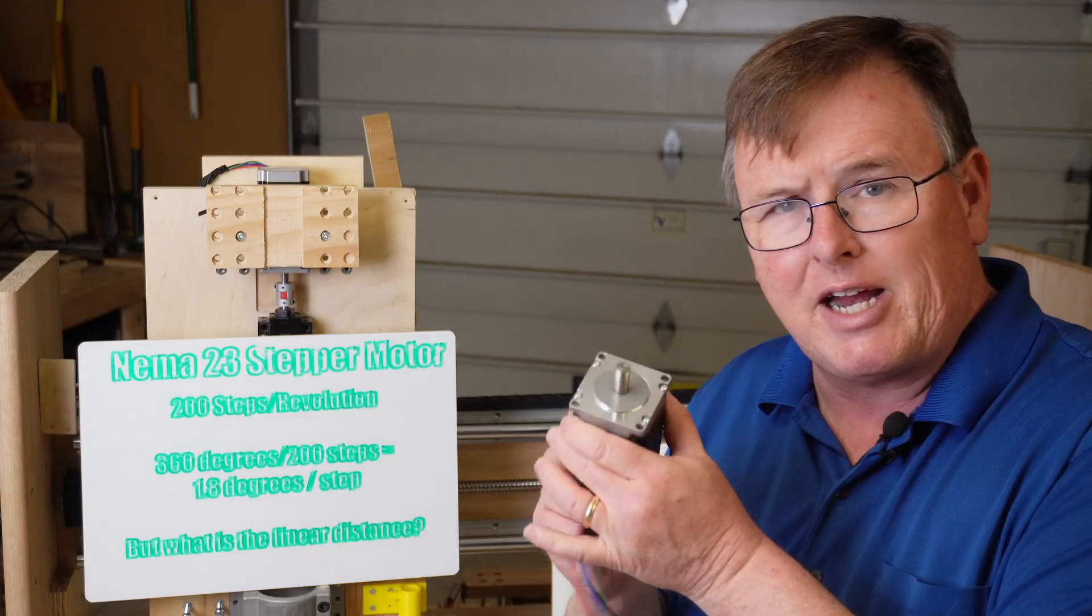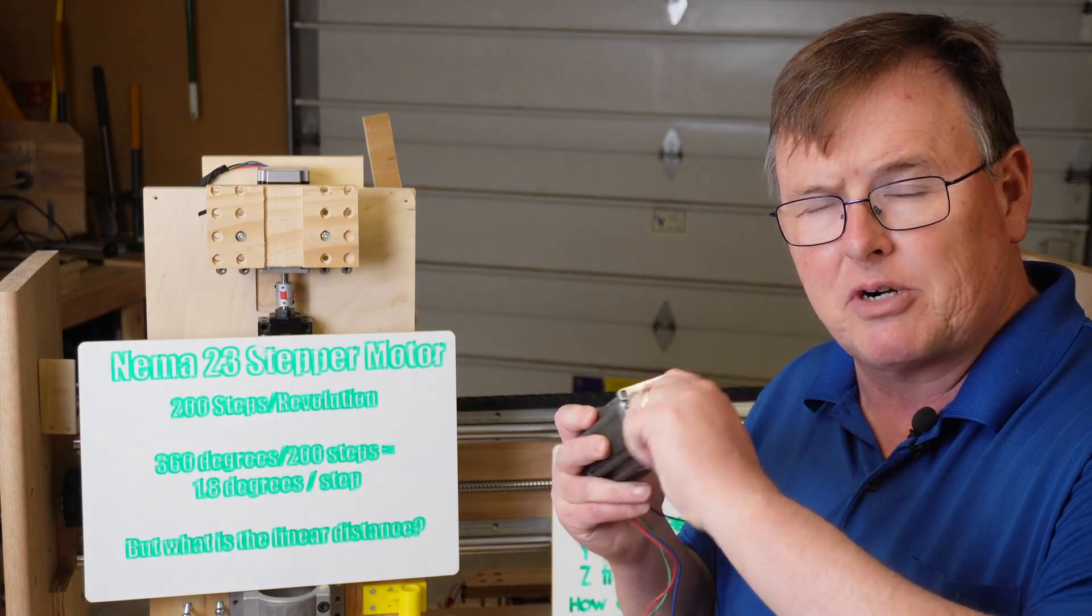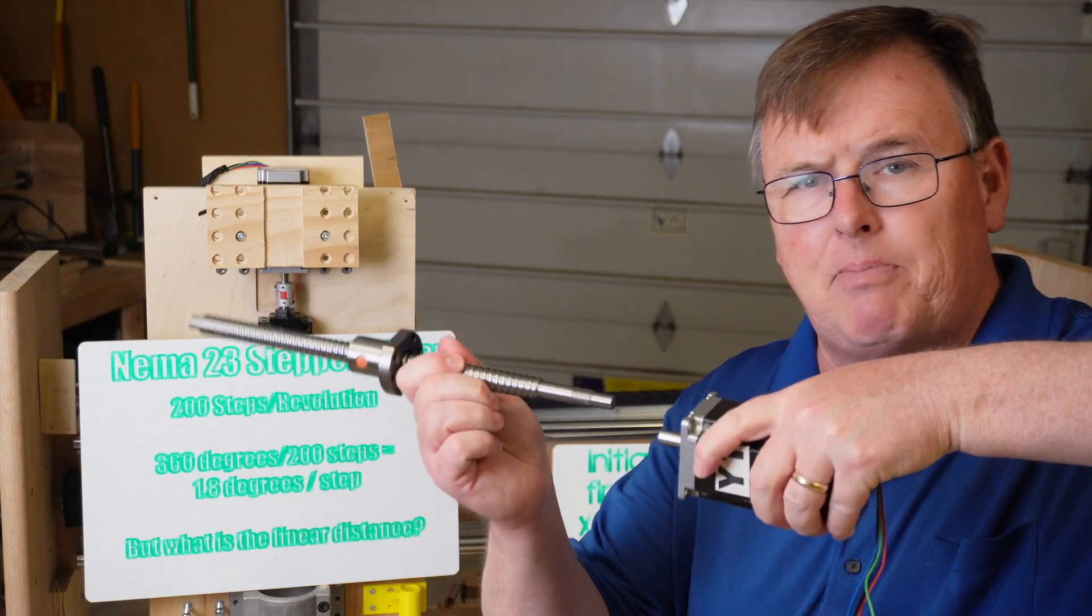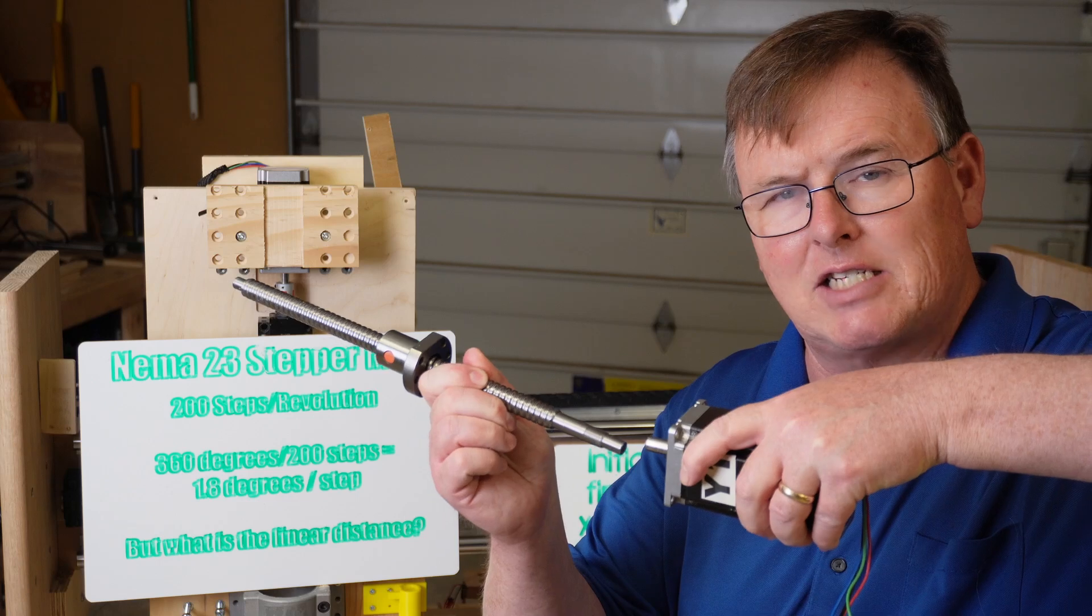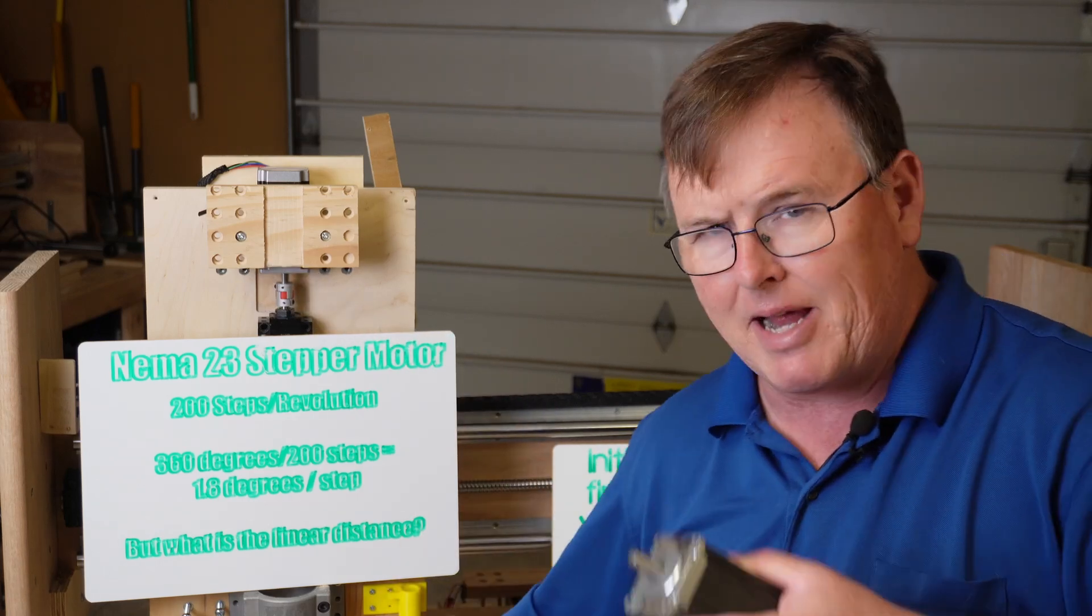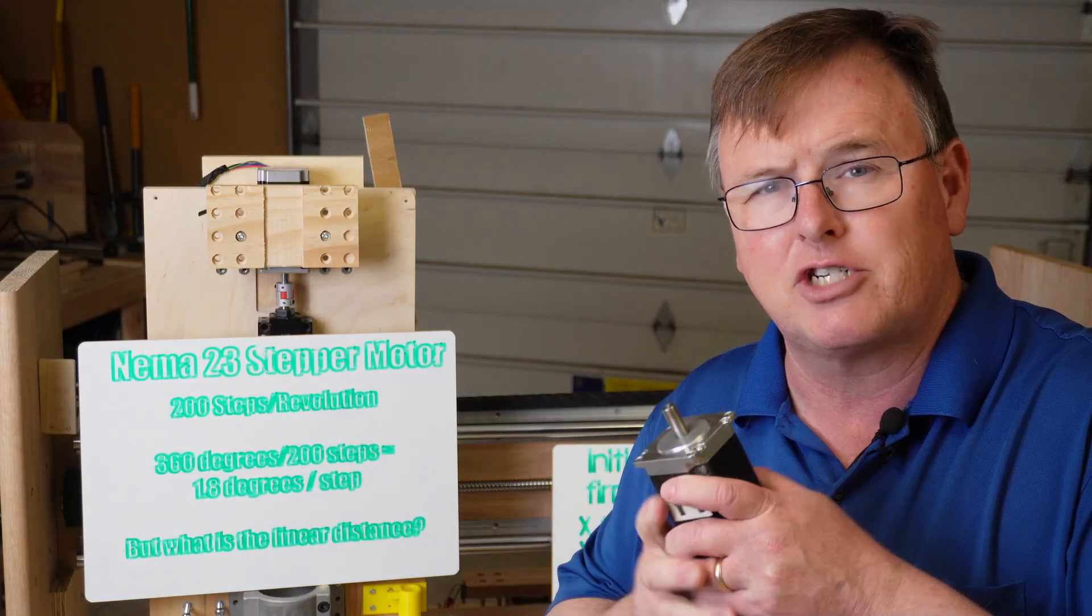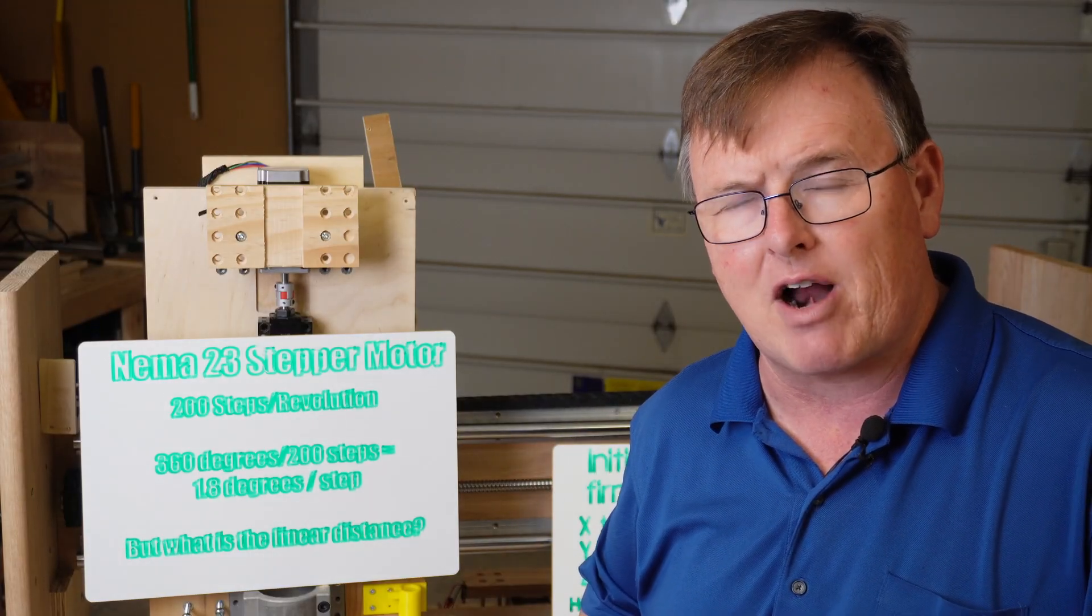But ultimately we could care less about what the angular twist is per step. What we really care about is when we hook it up to a ball screw how far the ball screw is going to move. And it would sure be nice if there was a way that we could make the resolution of these steps to go from 1.8 degrees to smaller. And the answer is found inside the stepper motor drivers.